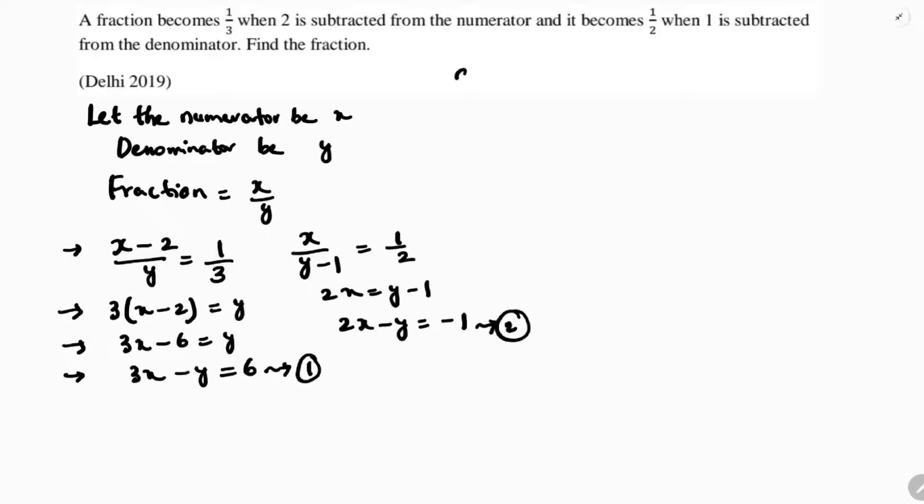Now, solving equation 1 and equation 2. 3x minus y is 6, 2x minus y is minus 1. I will solve by elimination. Because the coefficients of y are same, 1 and 1, and both are of same sign, negative sign. So, I will subtract.